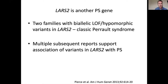Around the time we published the CLPP discovery — the third gene associated with Perrault syndrome — there was another report from Mary-Claire King's group of variants in LARS2 also causing this condition. We've seen that variants in both HARS2, which adds histidine to the cognate transfer RNA, and LARS2, which adds leucine as the amino acid, are both relevant to this condition. There have been many subsequent reports of variants in those two genes causing Perrault syndrome.